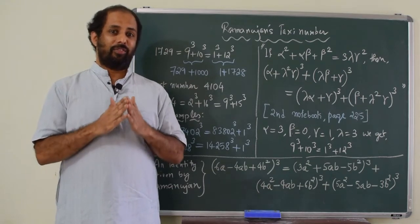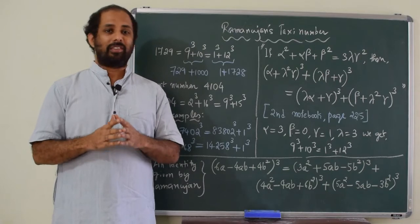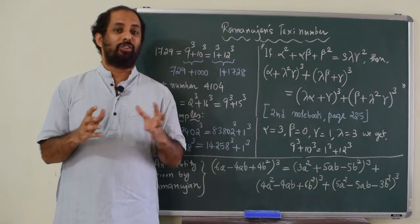But as a response, Ramanujan told, no, it is not a dull number, it is a very interesting number because it is the smallest number which can be written as sum of two cubes in two different ways.